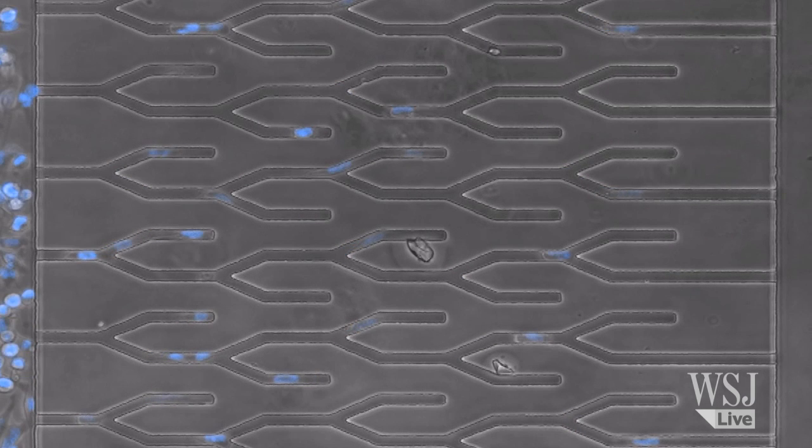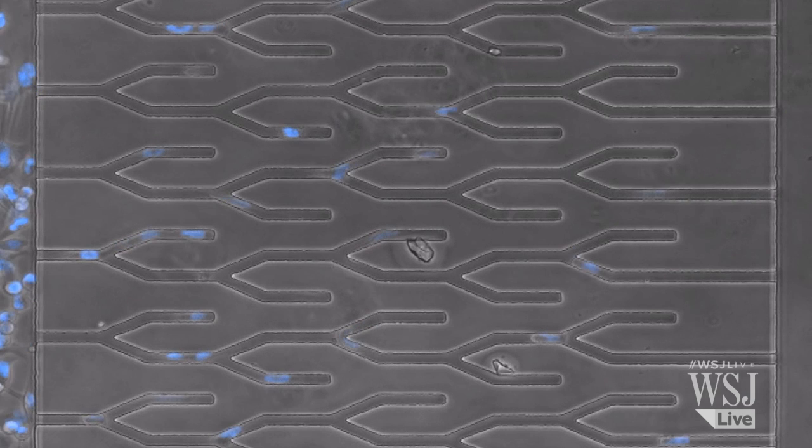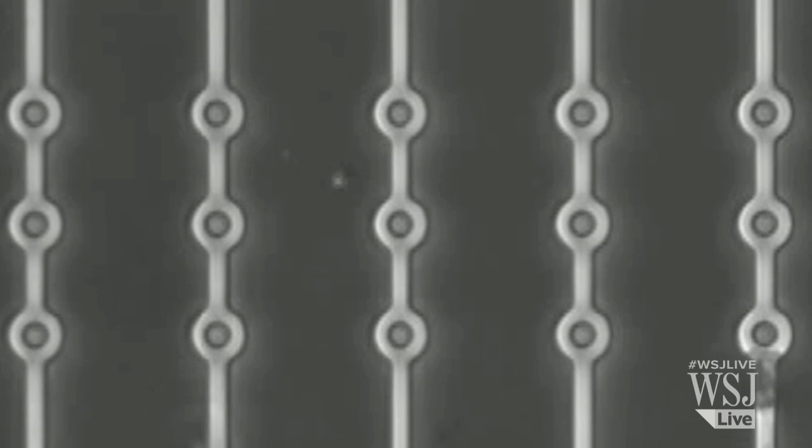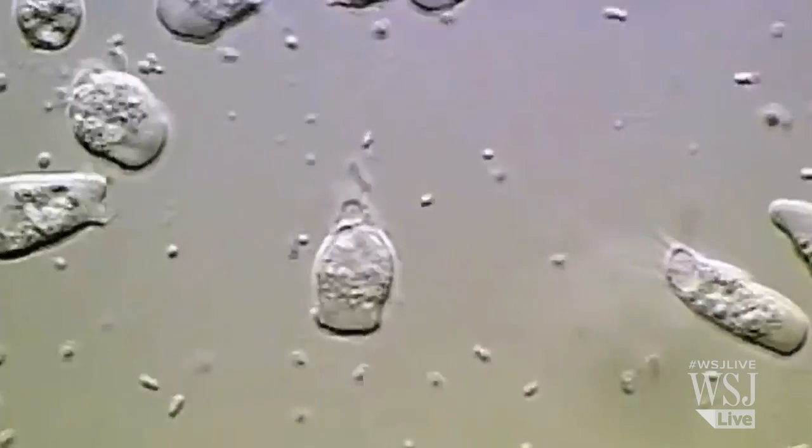For scientists, this nano-Olympics is a way to crowdsource a global experiment in cell mobility. The contests are providing the first common comparison of the way many cell types move and sense direction. Cheating is allowed.